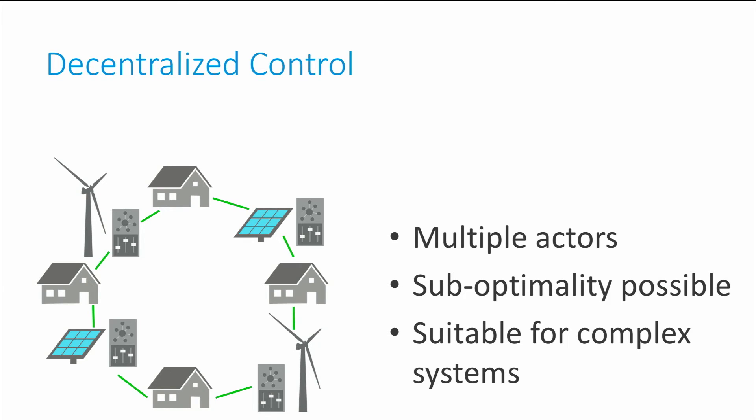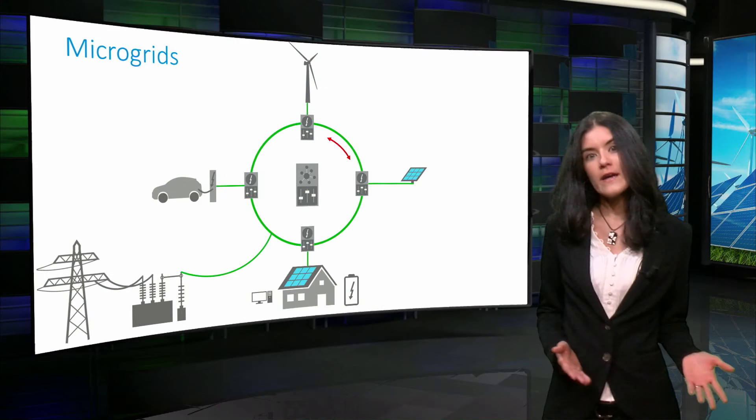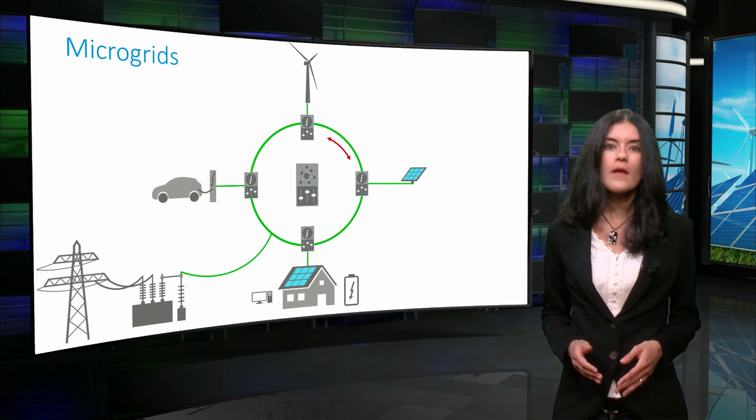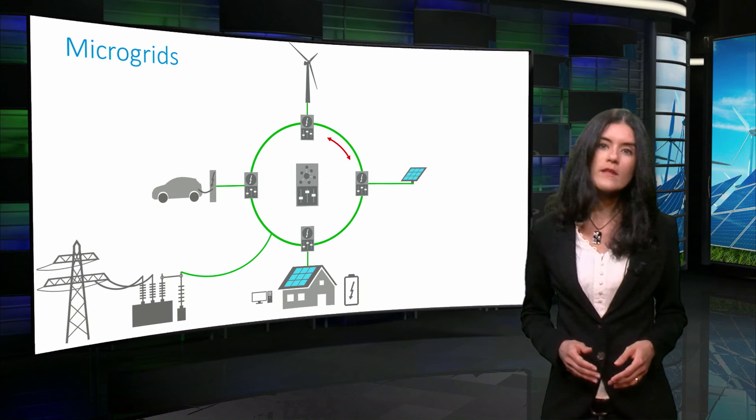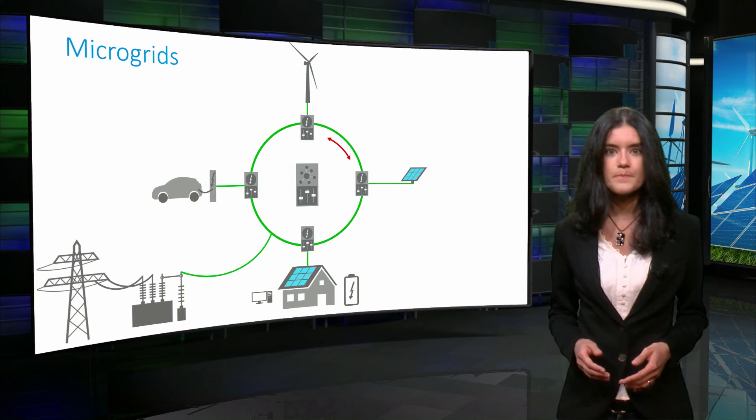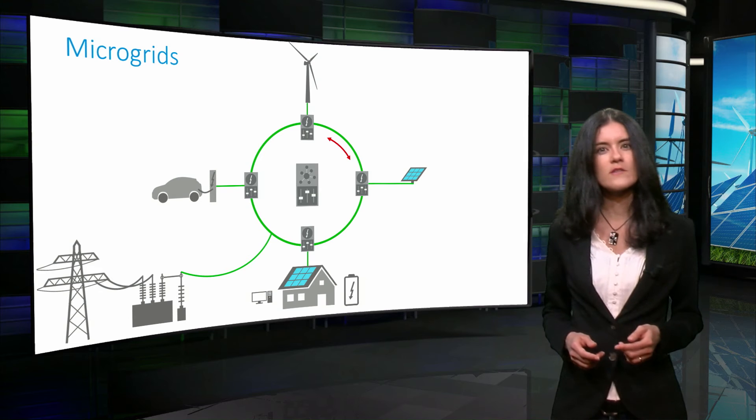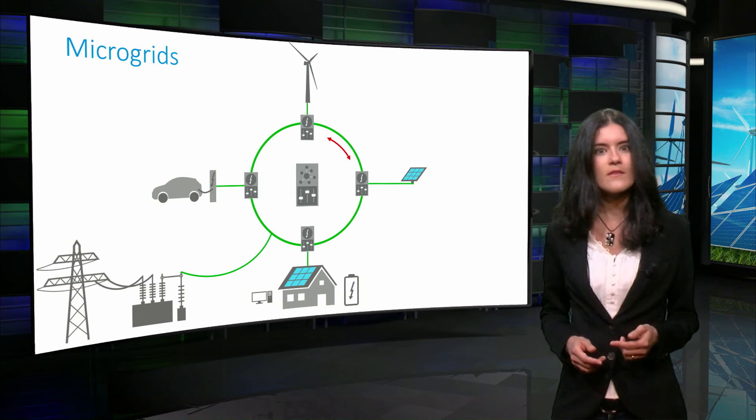The centralized control has the potential to operate in systems containing a large amount of distributed generation and actors. A microgrid can operate in grid-connected or off-grid mode. The control can be centralized or decentralized, depending on the characteristics of the system. Let's assume centralized operation when analyzing the following case.